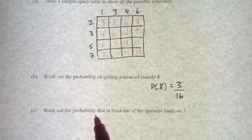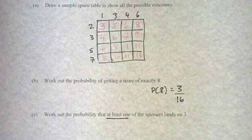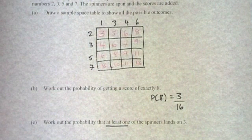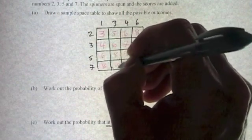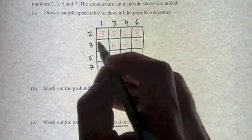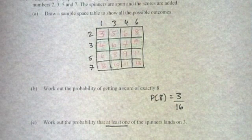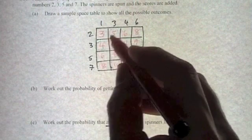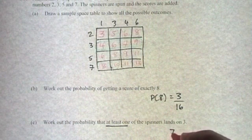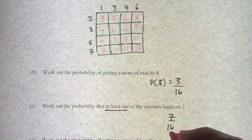The next question says work out the probability that at least one of the spinners lands on a 3. I can't do this straight from the outcomes, but I know here, all of those scores there, this top spinner landed on a 3. And then this spinner here, for all of those scores, this spinner landed on a 3. So how many times altogether did at least one of them land on a 3? There's 1, 2, 3, 4, 5, 6, 7 times at least one of them landed on a 3. So that's going to be 7 out of, again there's 16 outcomes, so that's 7 out of 16 and that will not simplify.